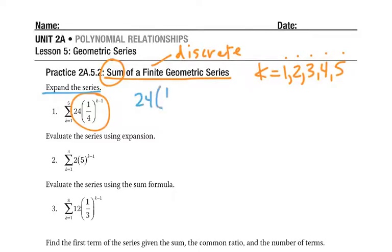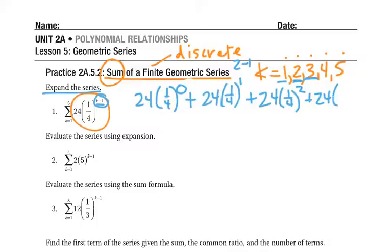So 24 times 1 fourth to the k minus 1. Our first k is 1, so 1 minus 1 is 0, so we could just write 0. Then plus, because we're adding this, we use 2. So 24 times 1 fourth to the 2 minus 1, which would just be 1. Plus 24 times 1 fourth to the 3 minus 1 would be 2. Now, we don't just stop there when we're expanding it. We want to simplify as much as possible.